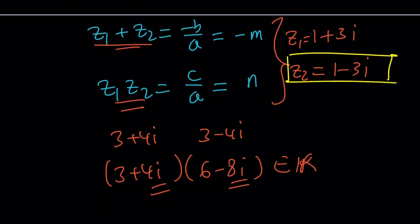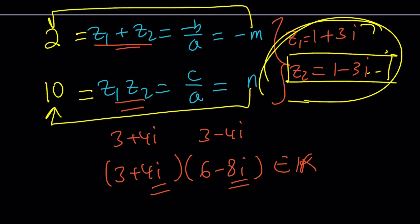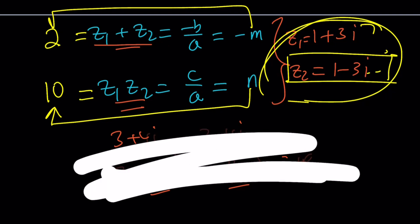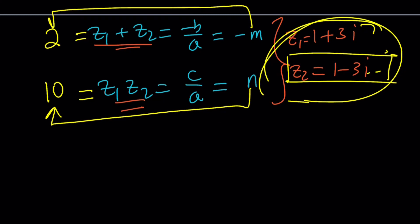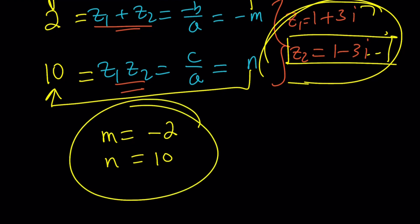Using Vieta's formulas with both roots known: z₁ plus z₂ equals 1 plus 1 equals 2, so negative m equals 2, giving m equals negative 2. The product equals 1 plus 9 equals 10, so n equals 10. We get m and n directly — much easier than the first method. Same result: m equals negative 2, n equals 10.